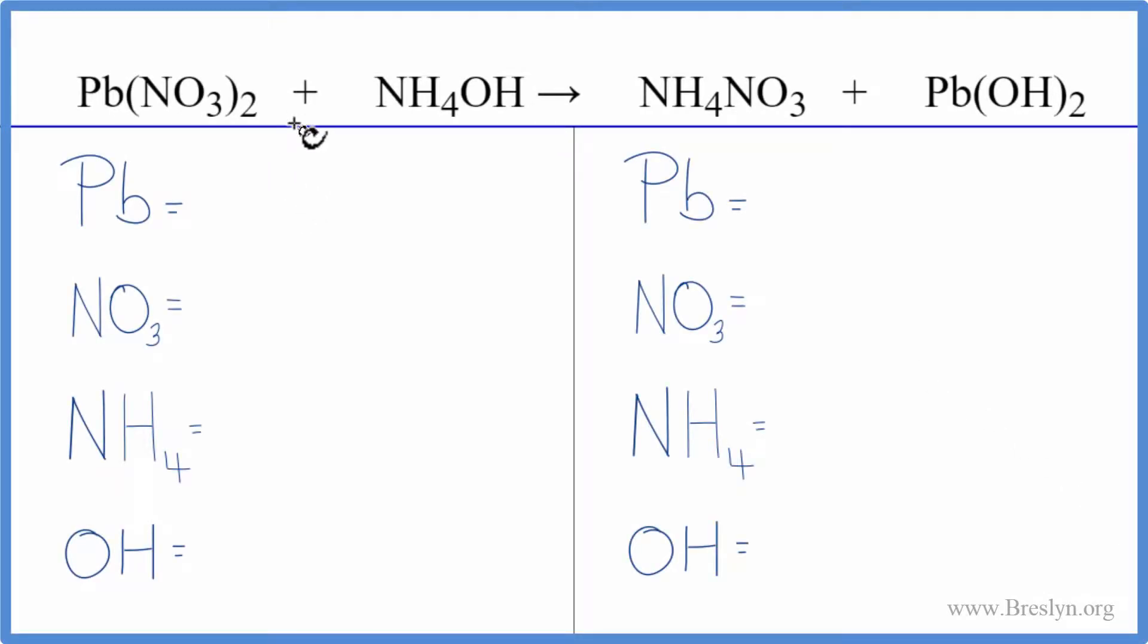So this equation, there's a lot going on here. It's a double displacement reaction. We have lead nitrate plus ammonium hydroxide. The Pb and the NH4, they're going to switch places.